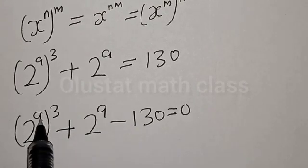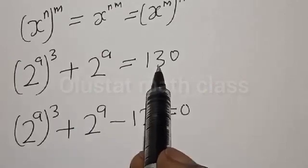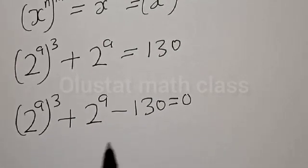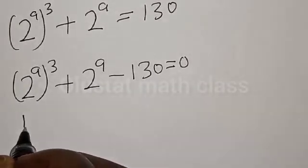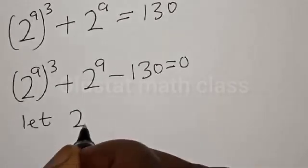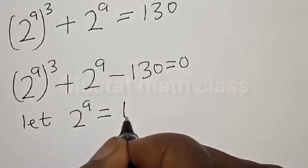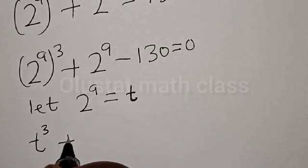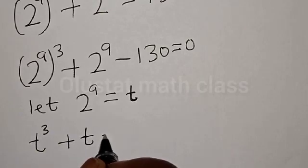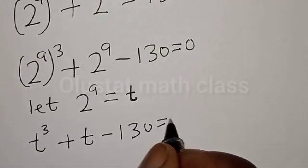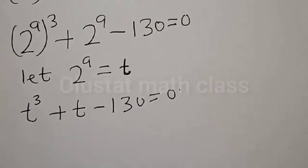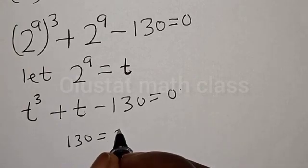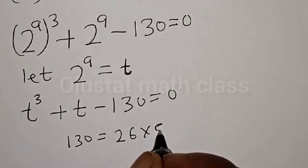We now equate to zero: 2 raised to power a cubed plus 2 raised to power a minus 130 is equal to 0. Let 2 raised to power a equal to t. Then we have t cubed plus t minus 130 equal to 0.